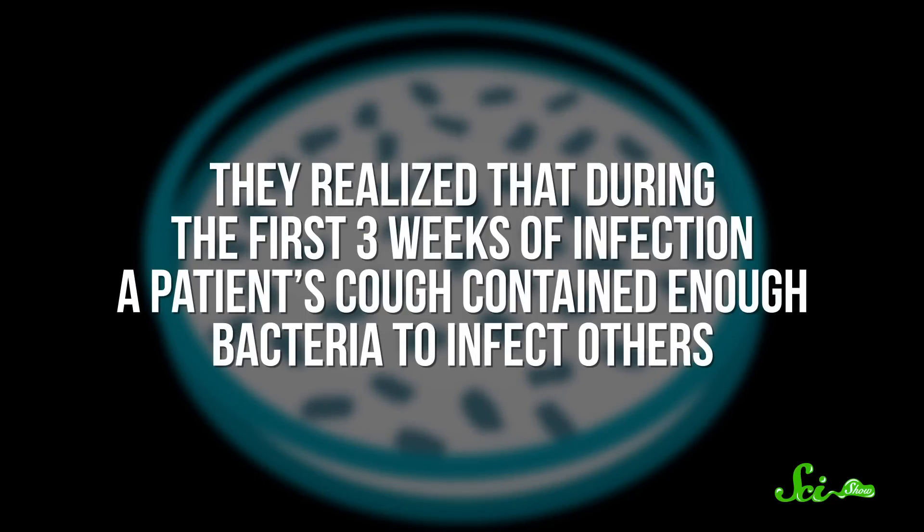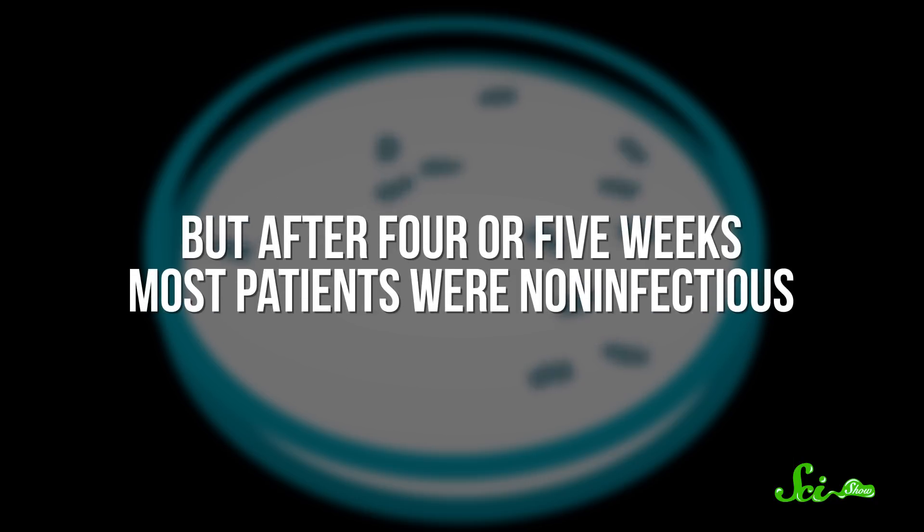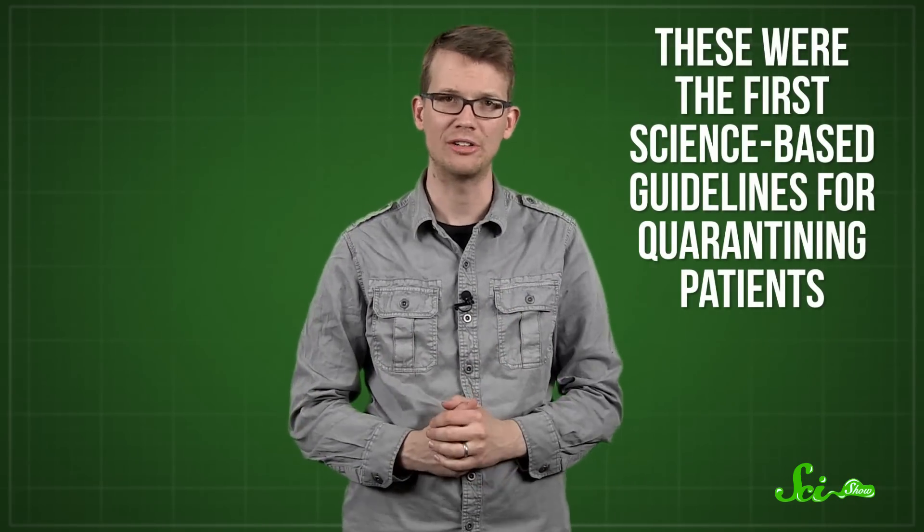With this test in hand, Kendrick's lab spread the word to local doctors that they could send in cough plates to be tested for pertussis. With the hundreds of cough plates they collected, they were able to better understand the mechanics of the disease. For instance, they realized that during the first three weeks of infection, a patient's cough contained enough bacteria to infect others. But after four or five weeks, most patients were non-infectious. This allowed Kendrick and Eldering to establish the first science-based guidelines for quarantining whooping cough patients.